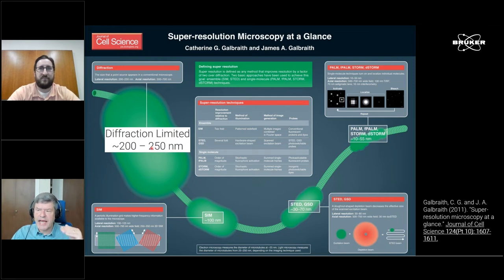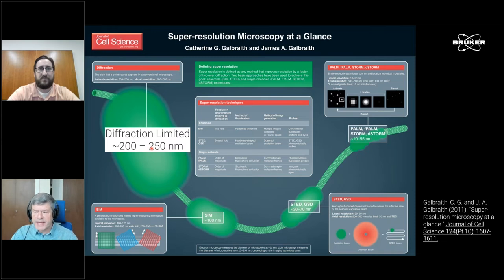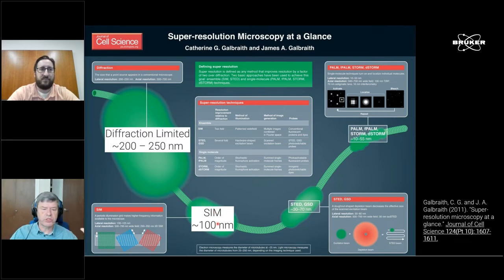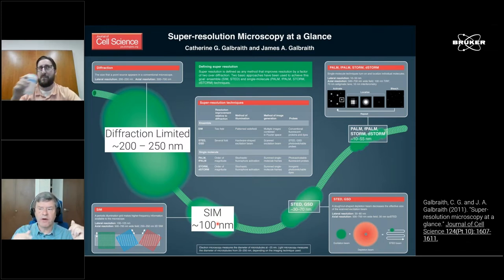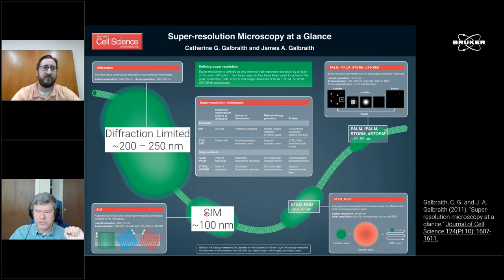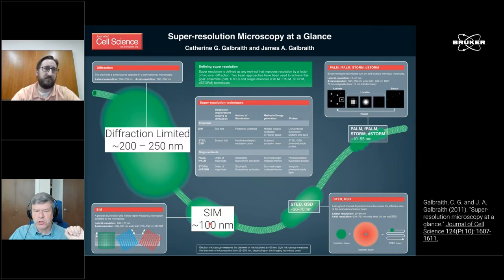That would be a very high-end diffraction-limited microscope. People always try to push the resolution, and that's where all the super resolution microscopes come into play. One very popular solution is structured illumination microscopy — that's the microscopy where you project patterns into the sample to amplify lower spatial frequencies. With structured illumination you can typically double the resolution, so about 100 nanometers, and if you add deconvolution on top of it, people claim you can get even a little bit better.